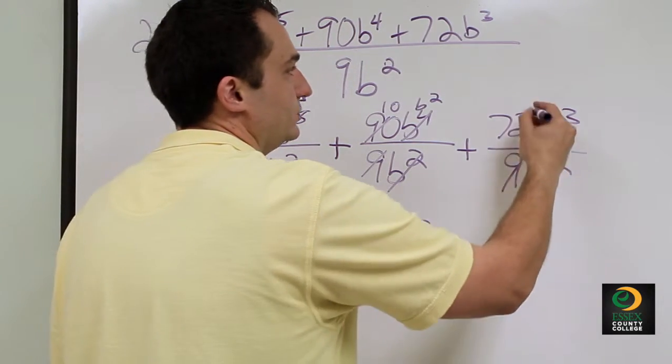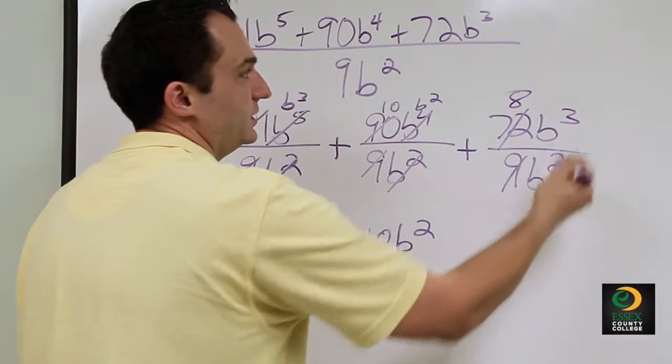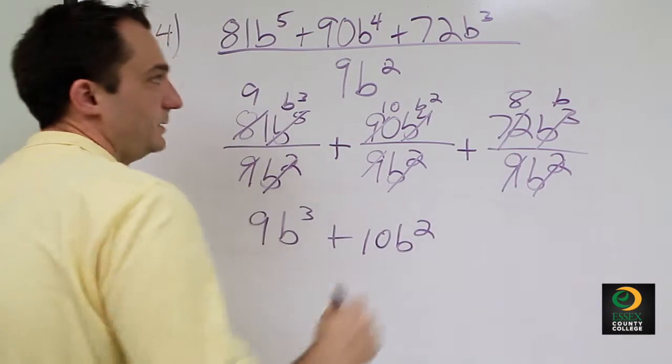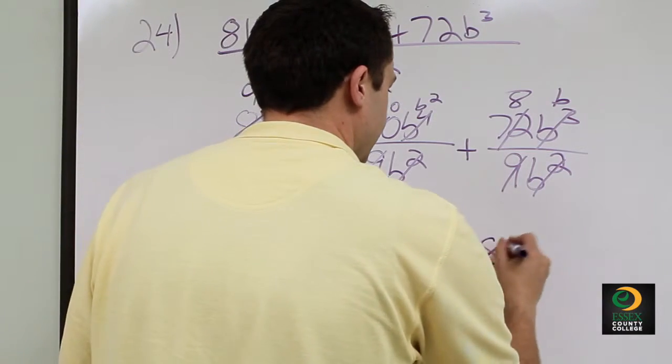9 goes into 72 eight times. 3 minus 2 is 1. The 3 is bigger than the 2, so the B stays on top. So then we get plus 8B.